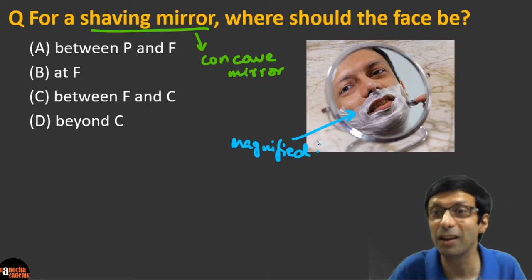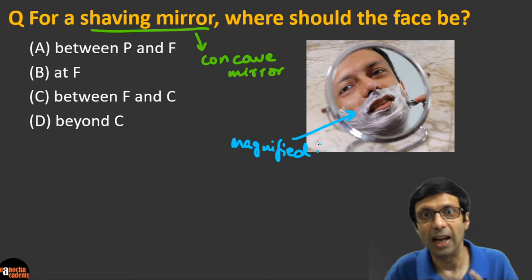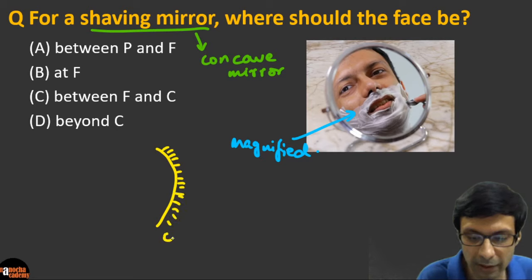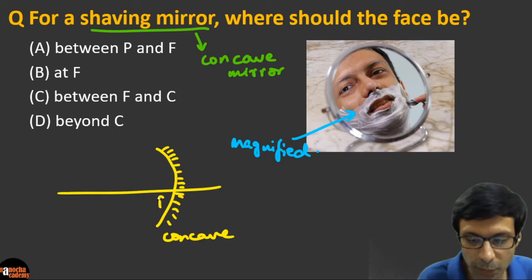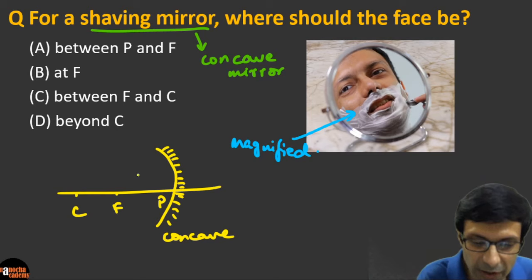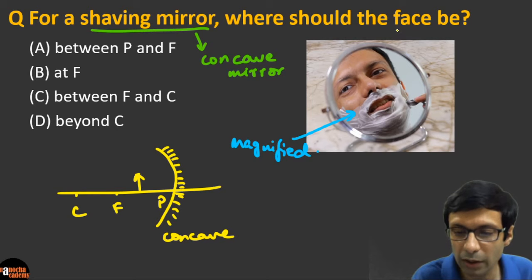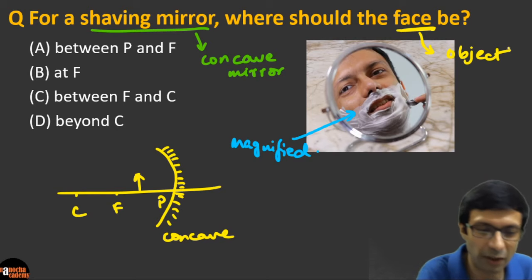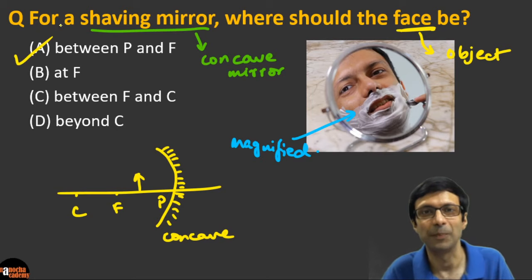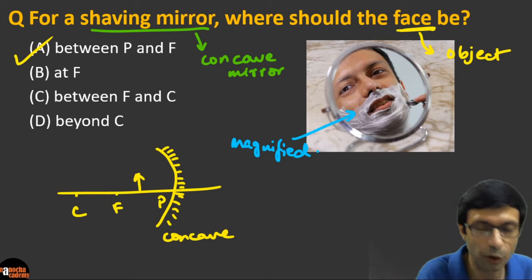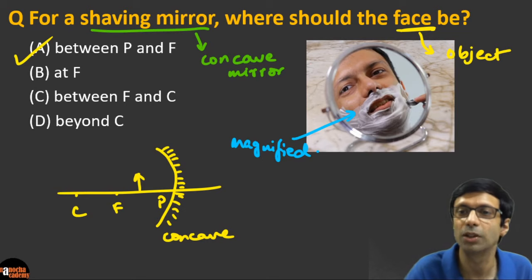For a concave mirror, to get a magnified image, the object — in this case, the face — should be placed between the pole and the focus. The correct answer is (a). When the face is placed between the pole and the focus, the concave mirror produces a magnified version of the image.